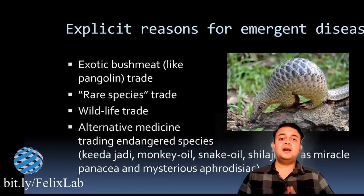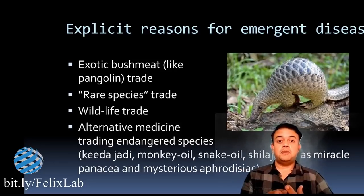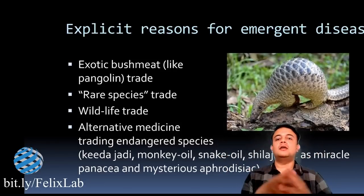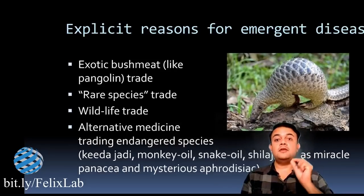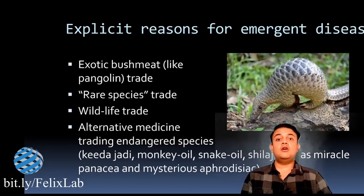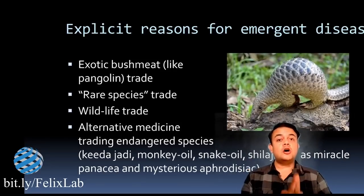Another very important reason is alternative medicine — not widely discussed — because alternative medicine practitioners are very keen to trade in endangered species. For example, Cordyceps, a symbiotic creature of a caterpillar and fungus, is an endangered species sold by alternative medicine propagandists as a mysterious panacea: 'Do you have cancer? I know this rare plant from the Himalayas that can solve your problems' — with zero scientific evidence. Similarly, monkey oil and snake oil, exotic oils from wild animals, are sold for thousands of dollars as miracle cures or aphrodisiacs. We must stop this wildlife trade.